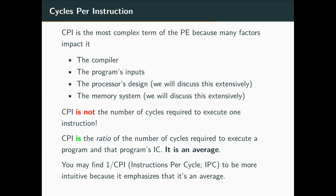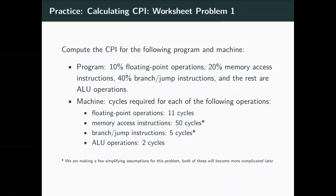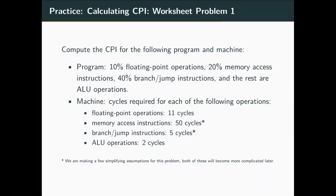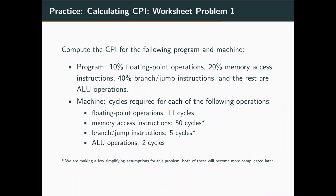CPI is not the number of cycles required to execute one instruction, because each instruction is different. It is, however, the ratio of the number of cycles required to execute the program and that program's instruction count — it's an average. It may be useful to think about one over CPI, so instructions per cycle, IPC. Maybe it's a bit more intuitive because it emphasizes that it's an average. Either way, just remember we have to care about an average.